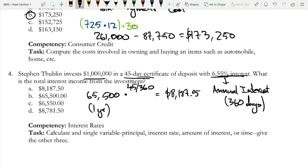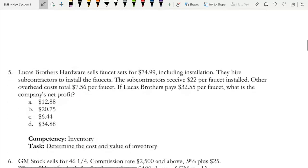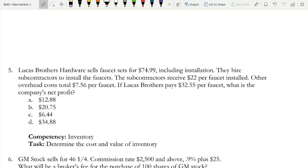Now on to the last question for the video. Lucas Brothers Hardware sells faucet sets for $74.99, including installation. They hire subcontractors to install the faucets. The subcontractors receive $22 per faucet installed. Other overhead costs total $7.56 per faucet. If Lucas Brothers pays $32.55 per faucet, what is the company's net profit?